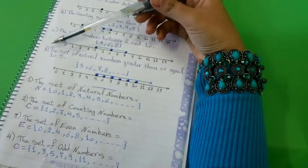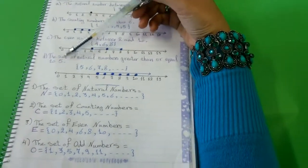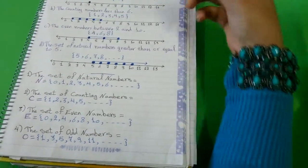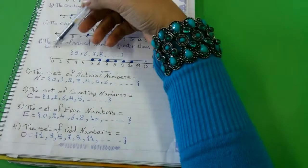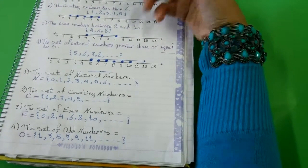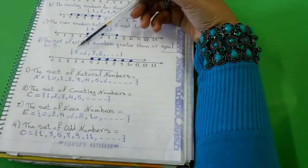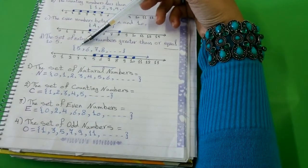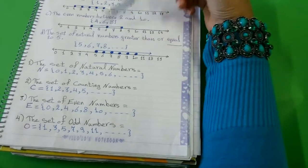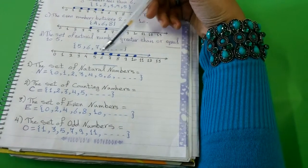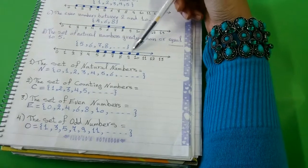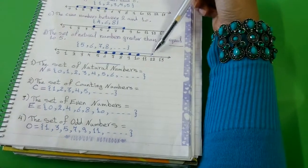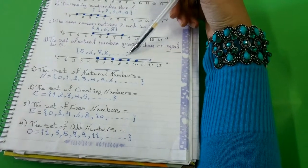The last example: the set of natural numbers greater than or equal to 5. 'Or equal to' means I have to include number 5. I start with 5, then 6, 7, 8, 9, 10, and so on. I can't write all of them, so I will graph 5, 6, 7, 8, 9, 10, then make an arrow with no end. This ray means the set is infinite.